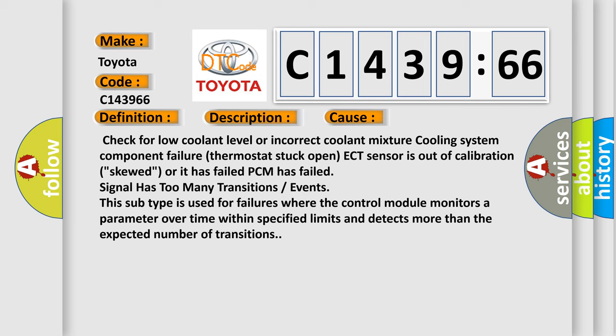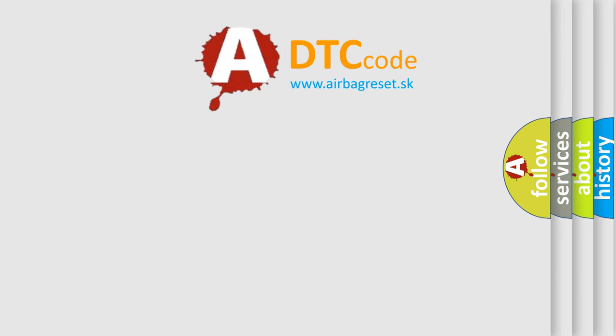The PCM has failed signal has too many transitions or events. This subtype is used for failures where the control module monitors a parameter over time within specified limits and detects more than the expected number of transitions.